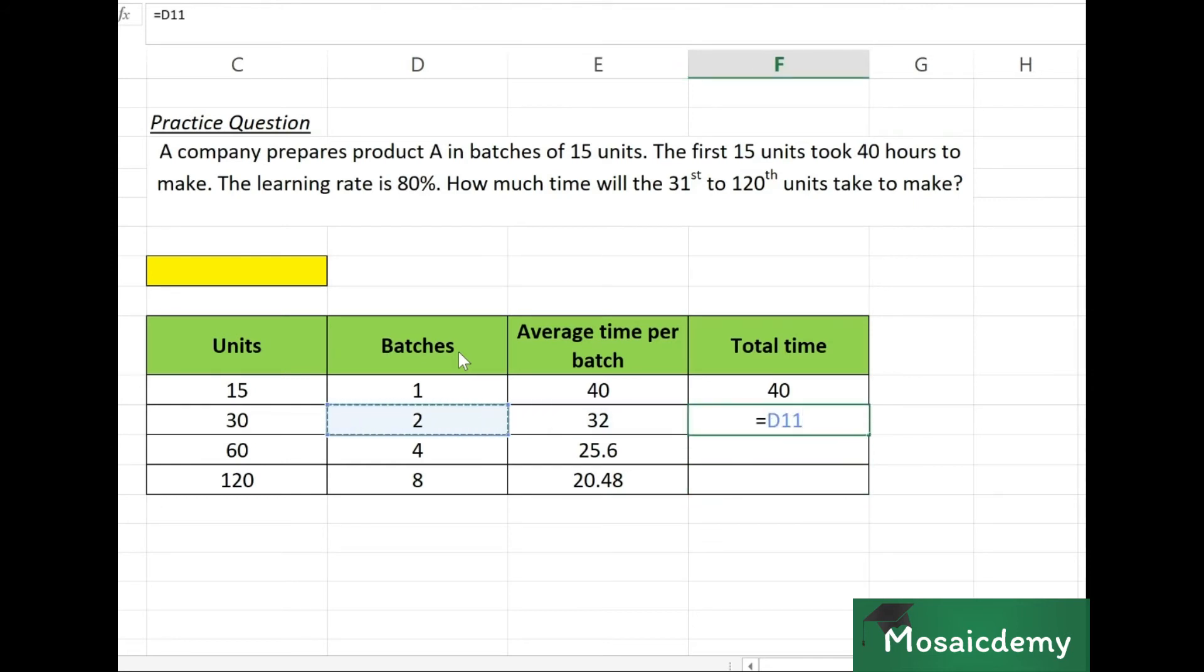Now we get the total time, so number of batches into average time per batch. 2 into 32 gives us 64, 4 into 25.6 gives us 102.4, and 8 into 20.48 gives us 163.84.